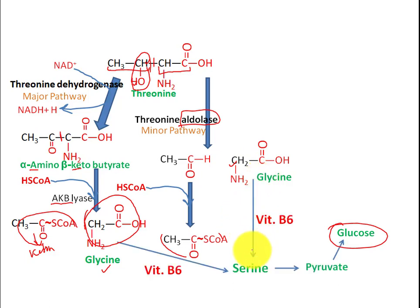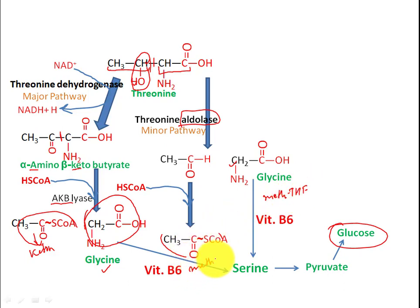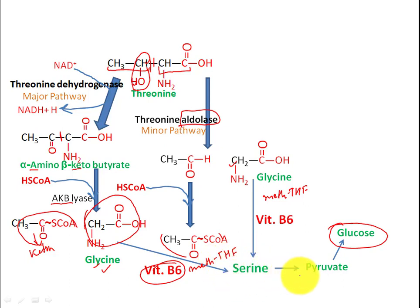The glycine produced by pathways one and two is then converted into serine by the enzyme glycine hydroxymethyltransferase, utilizing methylene-tetrahydrofolate and vitamin B6. The additional carbon in serine comes from tetrahydrofolate. This serine is then converted into pyruvate, and pyruvate is converted into oxaloacetate, which ultimately forms glucose.